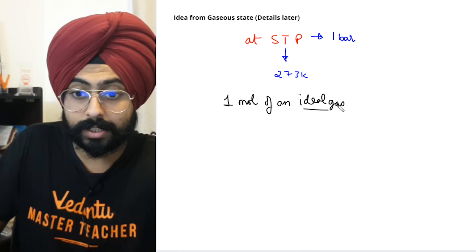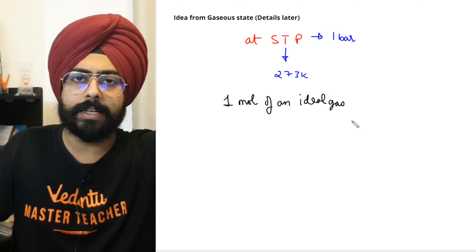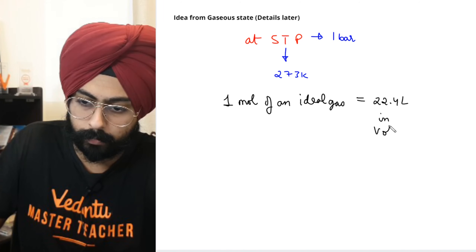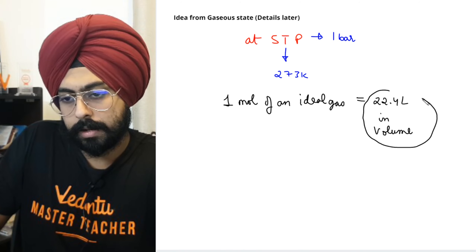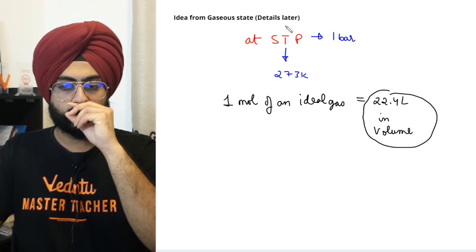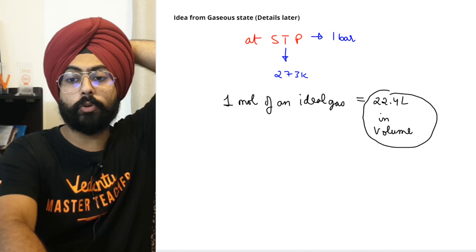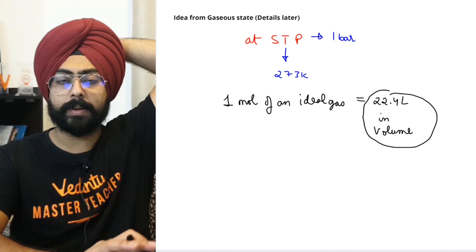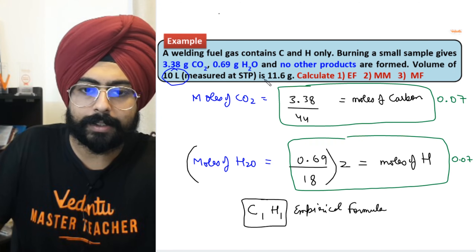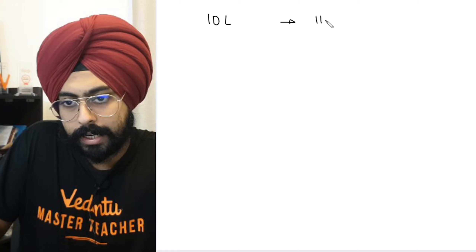At standard temperature and pressure (STP), where temperature is 273 K and pressure is 1 bar (approximately 1 atm), one mole of an ideal gas occupies 22.4 liters in volume. This comes from the equation PV = nRT solved for one mole at STP.